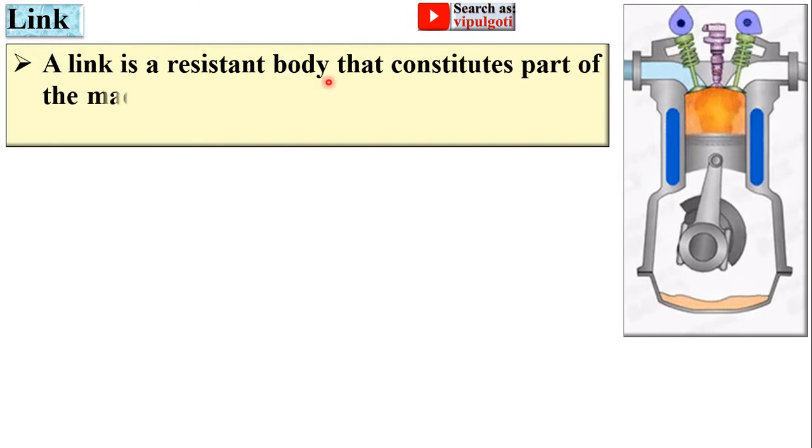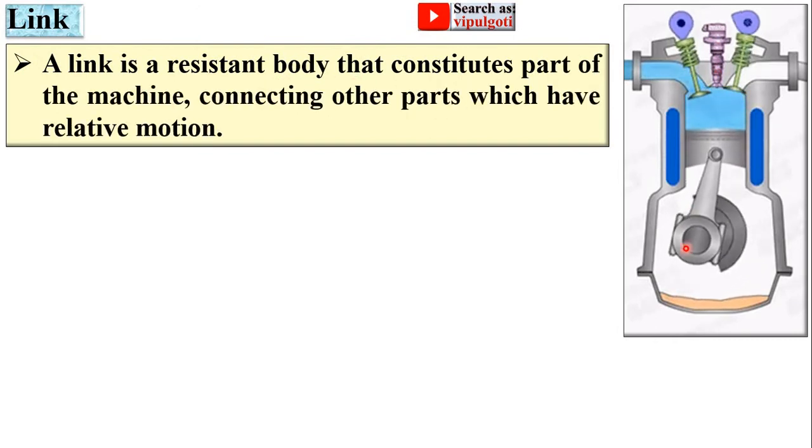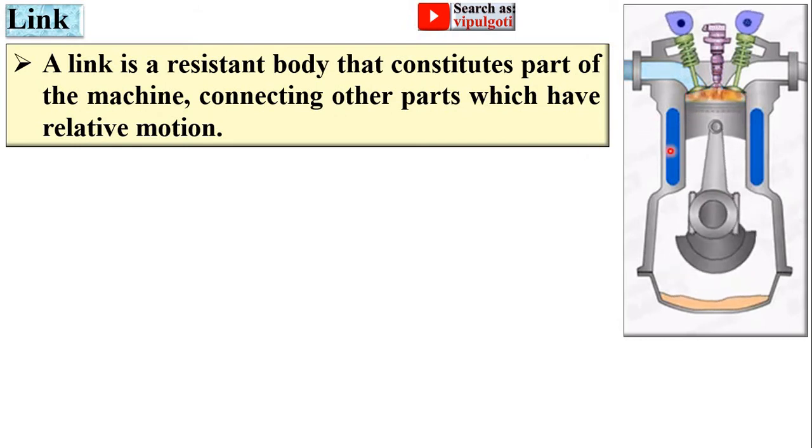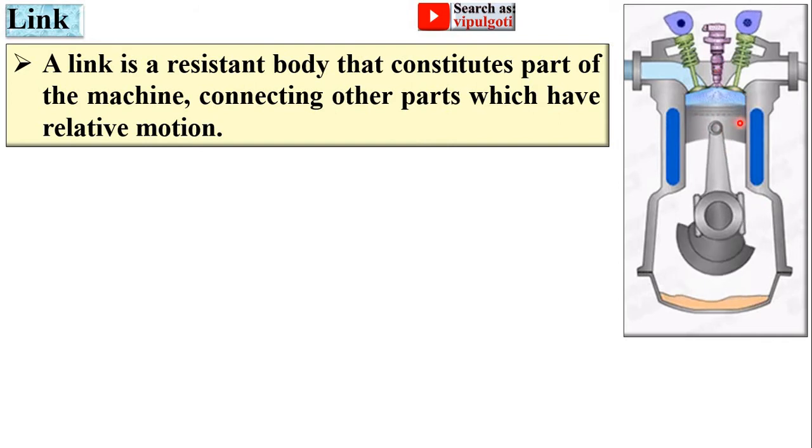A link is a resistant body that constitutes part of the machine. Here you can see an IC engine having different resisting bodies connecting other parts which have relative motion. This is a piston and this is the cylinder, both having relative motion, so both are considered as a link.